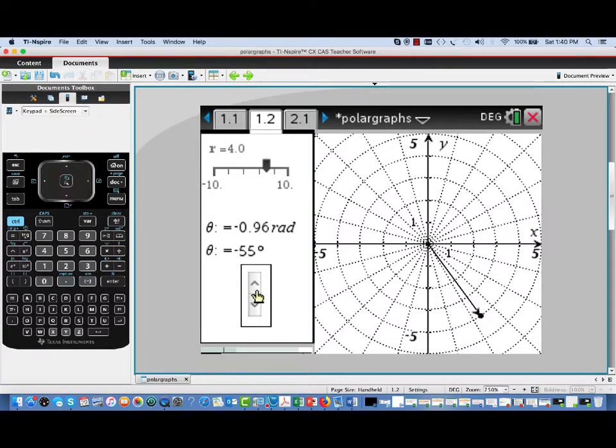Now, I'm going to go ahead and return this point to its original setting, which I believe was theta equals 45 degrees, or pi over 4.